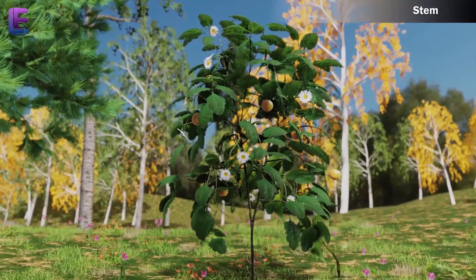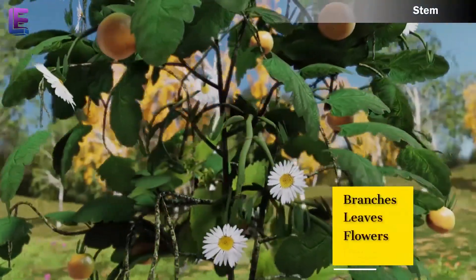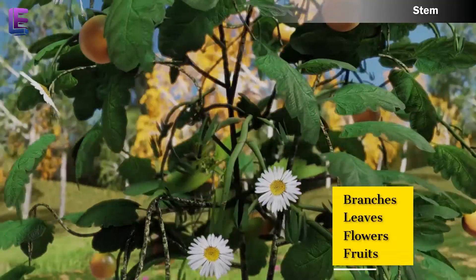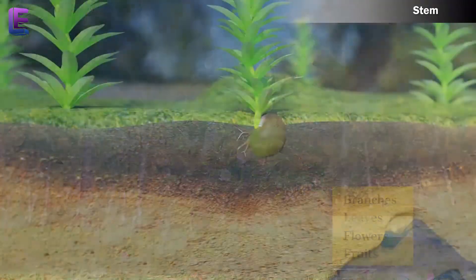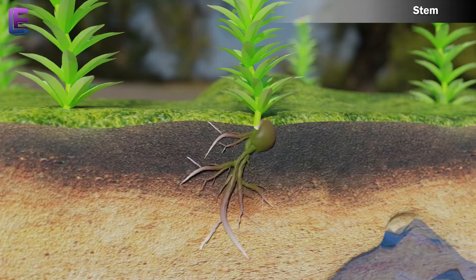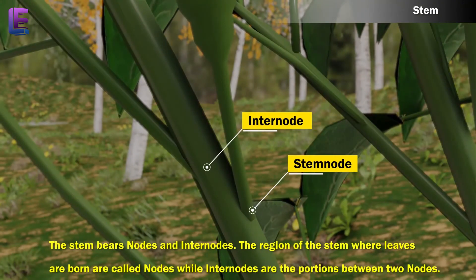Stem. The stem is the ascending part of the axis bearing branches, leaves, flowers and fruits. It develops from the plumule of the embryo of a germinating seed. The stem bears nodes and internodes. The region of the stem where leaves are born are called nodes, while internodes are the portions between two nodes.